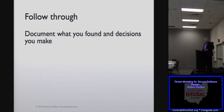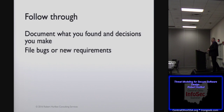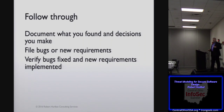Finally, we do follow through. We document what you found. You file the bugs or new requirements — if you find a threat in an existing system, that's a bug. If you've never implemented that feature, that's a requirement. That's what threat modeling helps you do. And then ultimately verify those are fixed, or verify that feature is now in place and the mitigation is in place.